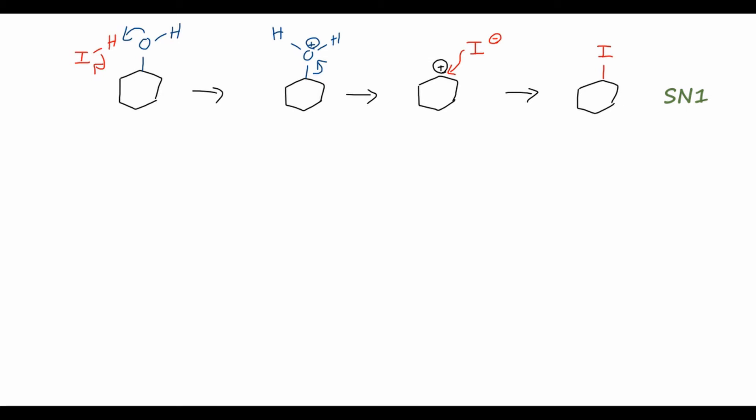So that's the reaction with HI. What if we use a different strong acid? So let's start with the same starting material, cyclohexanol. And we'll use sulfuric acid for this one. So again, sulfuric acid is a very strong acid, and the oxygen will again just pull off that hydrogen, giving us the protonated alcohol again, just like the previous reaction.